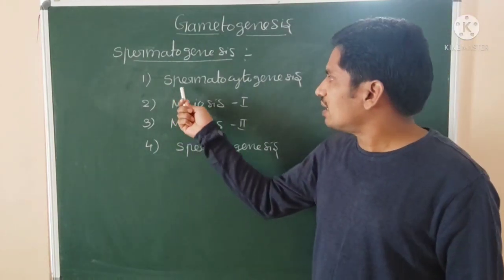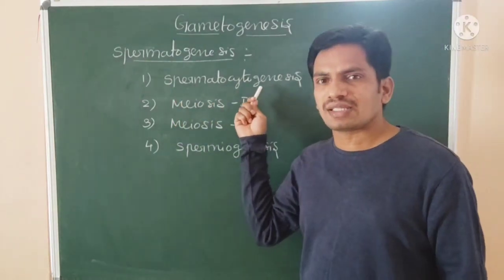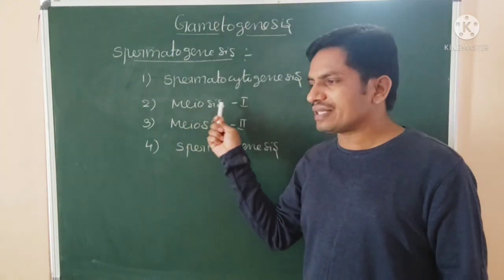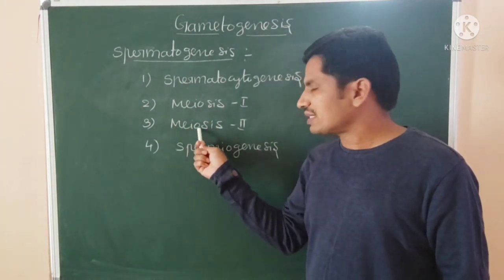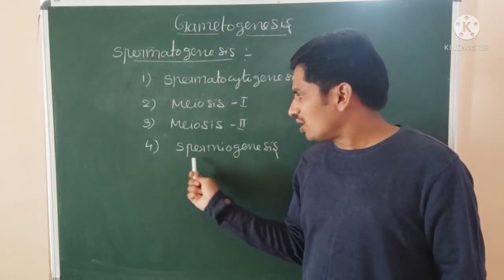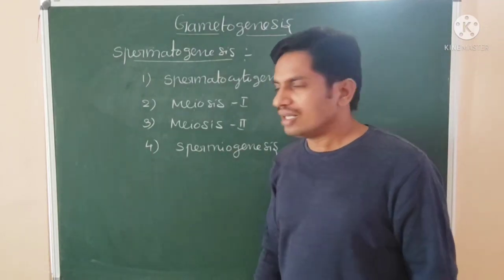The first stage is spermatocytogenesis. The second one is meiosis I. The third one is meiosis II. And the last phase is spermiogenesis.